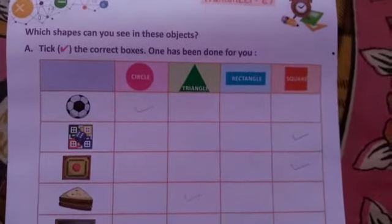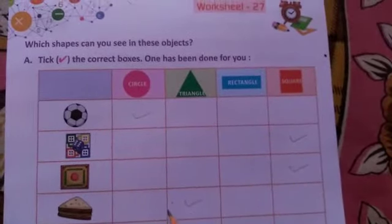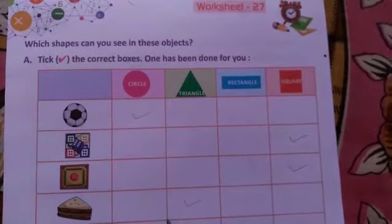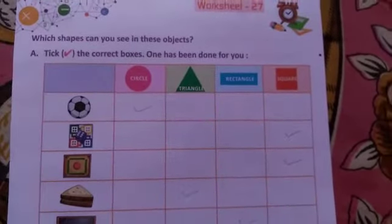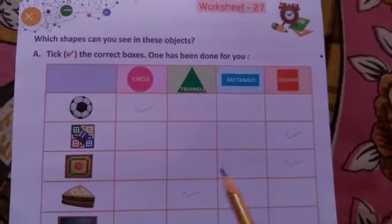Here we are saying that if there are objects, we can see these shapes. Question number A is tick the correct boxes, one has been done for you. We have to see these objects and I have to tick those boxes which are the shapes.